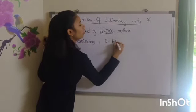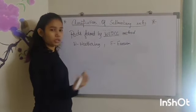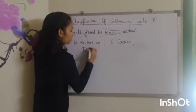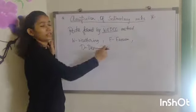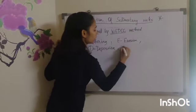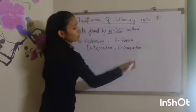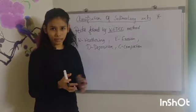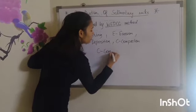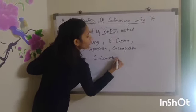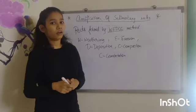E stands for erosion. Erosion is the transportation of these sediments from one location to another. D is deposition — the deposition of these eroded sediments. The first C stands for compaction, which means the coming together of deposited sediments to hold a particular shape. The second C stands for cementation, which means the mixing of matrix and sediments to form a rock.